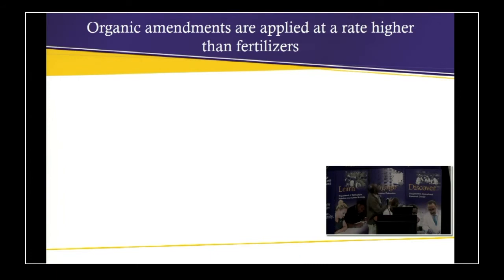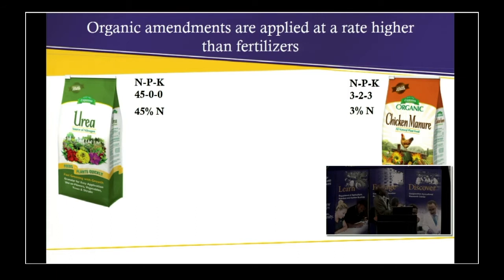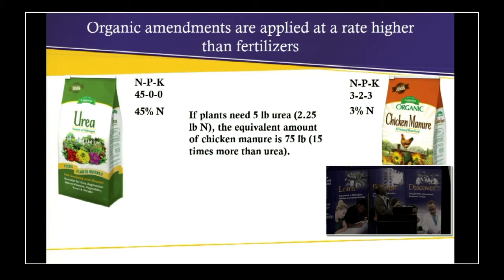Organic amendments are applied at a rate higher than conventional fertilizers. For example, urea has 45% nitrogen, and as mentioned earlier, chicken manure has 3% nitrogen. So if plants need 5 pounds of urea, the equivalent amount of chicken manure is 75 pounds — you have to apply 75 pounds of chicken manure to get the required nitrogen.